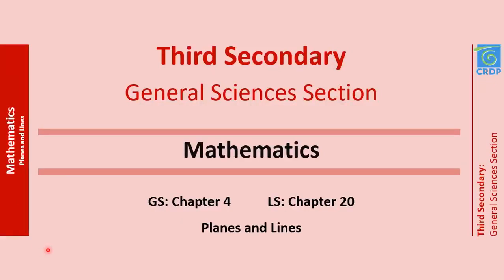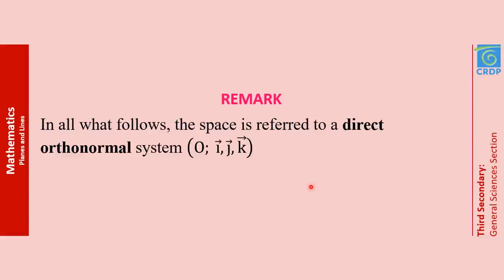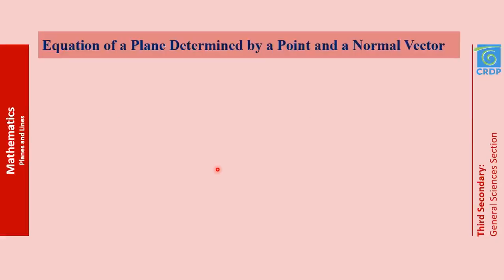Good morning everybody. Our chapter today is Planes and Lines. This is Chapter 4 in the GS textbook and Chapter 20 in the LS textbook. In this chapter, we will see the Cartesian equation of a plane in space and the system of parametric equations of a line in space. The space is referred to a direct orthonormal system OIJK. Let's begin with the first part: the equation of a plane determined by a point and a normal vector.